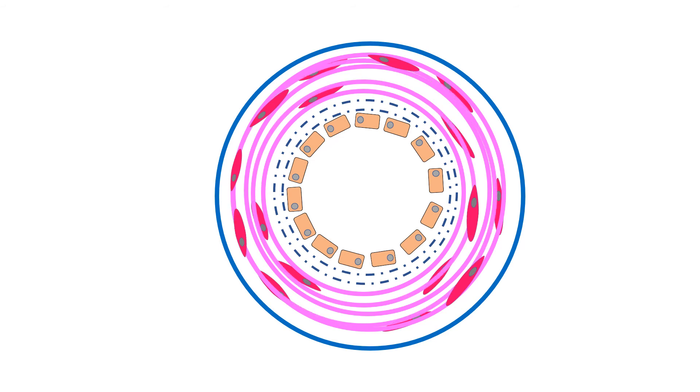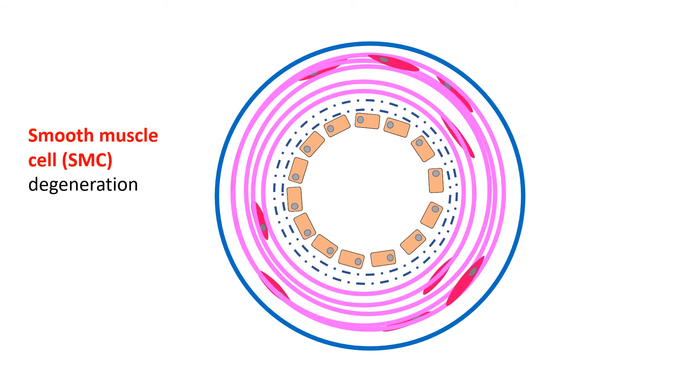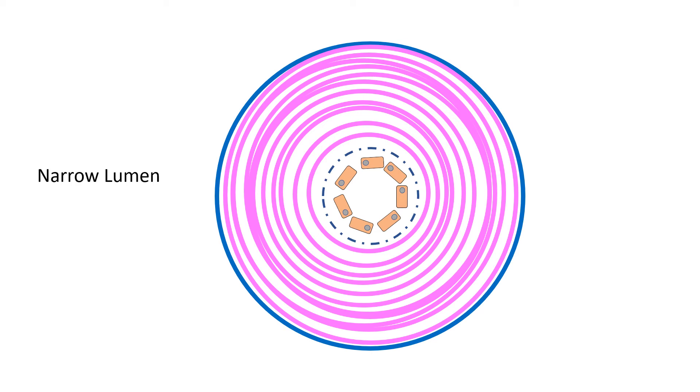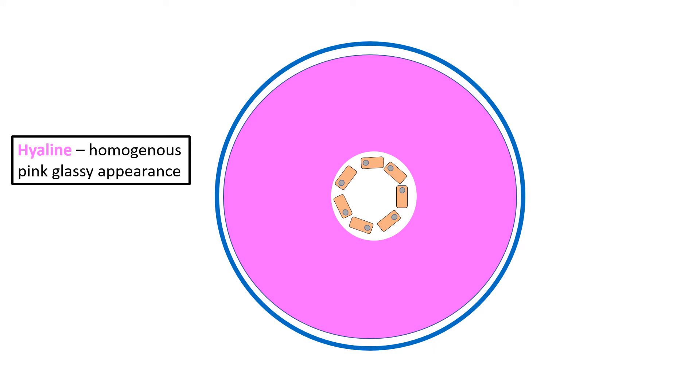As hyalinization progresses, more and more smooth muscle degenerates, while the vessel wall thickens, compressing the intima and pushing the lumen to become narrower. Ultimately, the whole vessel wall has a homogenous glassy pink appearance under the microscope on H&E staining, which is known as hyaline — hence the name hyaline arteriolosclerosis. The term hyaline comes from the Greek word for glass.